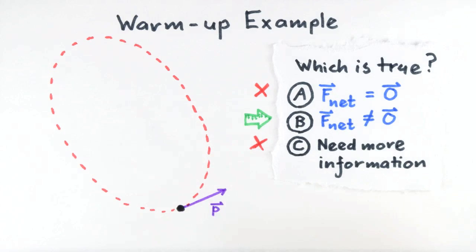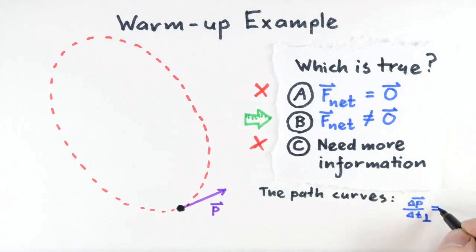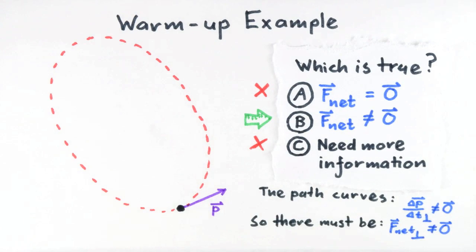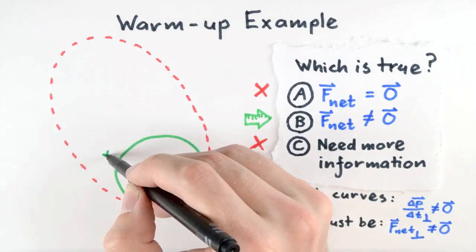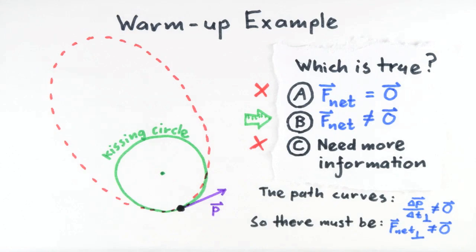We learn this from observing the motion and applying Newton's Second Law. We see the path of the object is curving. This means delta p over delta t perpendicular is non-zero. We can visualize delta p over delta t perpendicular by recognizing the kissing circle — the circle that smoothly fits the trajectory at this instant. The direction of delta p over delta t perpendicular must be toward the center of this circle. By Newton's Second Law, there must be a cause for this curving: a non-zero F net perpendicular pointing in the same direction. So if F net perpendicular is non-zero, then F net itself must be non-zero.